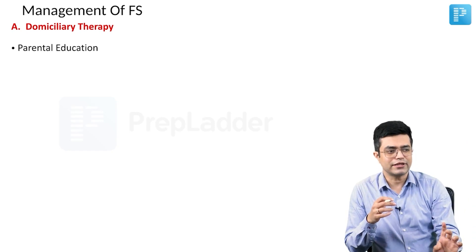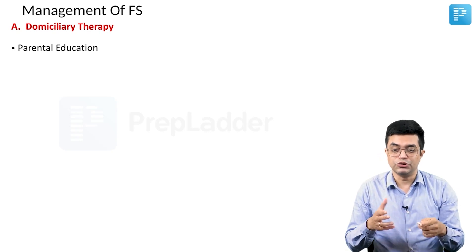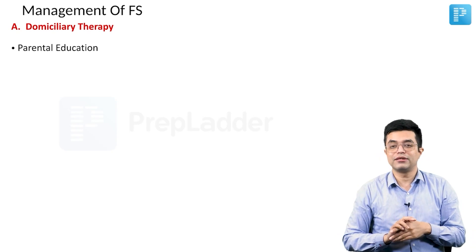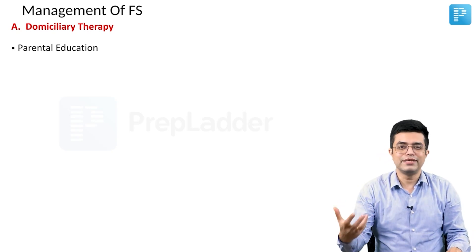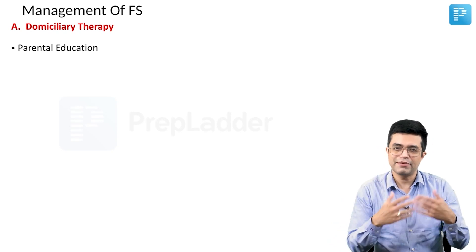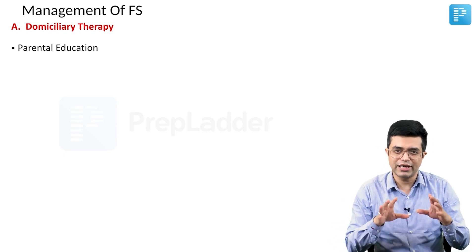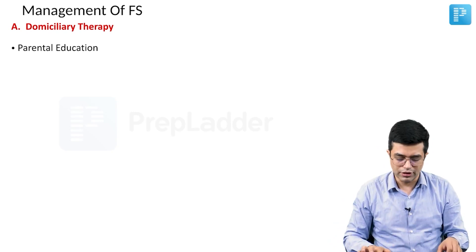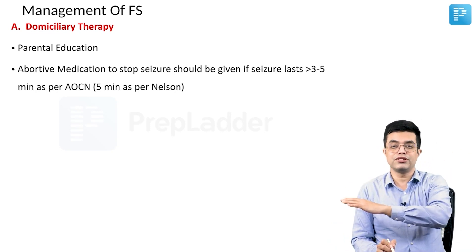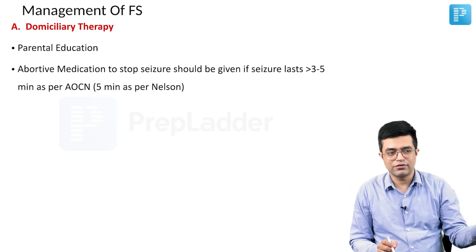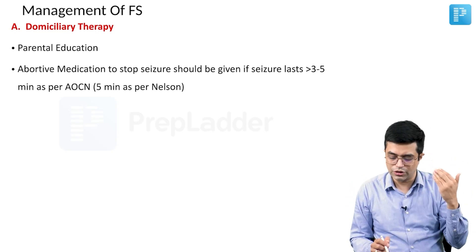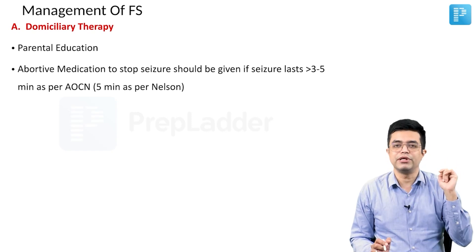Explain about the disease and what to do during a seizure. The child should be put in a proper position. Time should not be wasted on home remedies like putting a shoe to the nose of the child. Parental education about the disease is important. Abortive medication should be given before the child reaches medical attention, since it takes time to get from home to hospital — you cannot allow the seizure to continue.